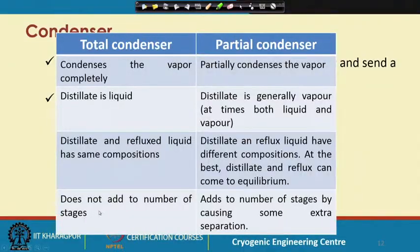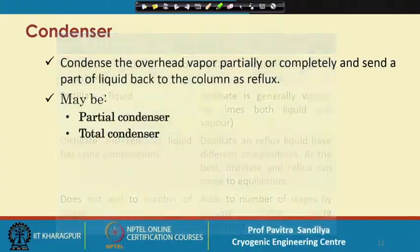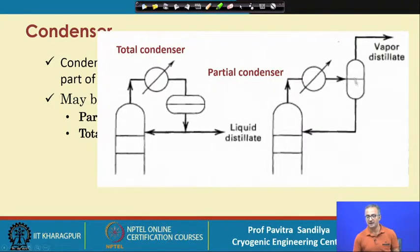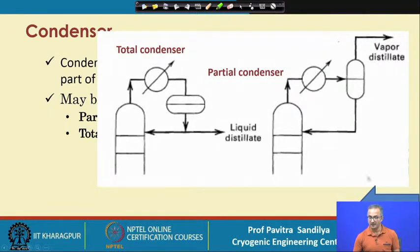The total condenser does not add to any number of stages, whereas the partial condenser, because it can effect some more separation, may act as an additional stage. In the total condenser configuration, the vapor coming in is completely condensed to liquid and we get the distillate as liquid. In the partial condenser, both liquid and vapor are separated in a phase separator — we get the vapor distillate while the liquid portion is refluxed back to the column.